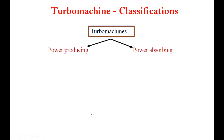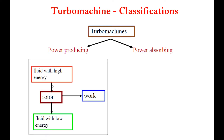Now, based on how the Turbomachines behave — whether it is producing power or absorbing power — the Turbomachines are classified accordingly. In power-producing machines, we have fluid at high energy which is transferred to the rotor, and we get some work output.